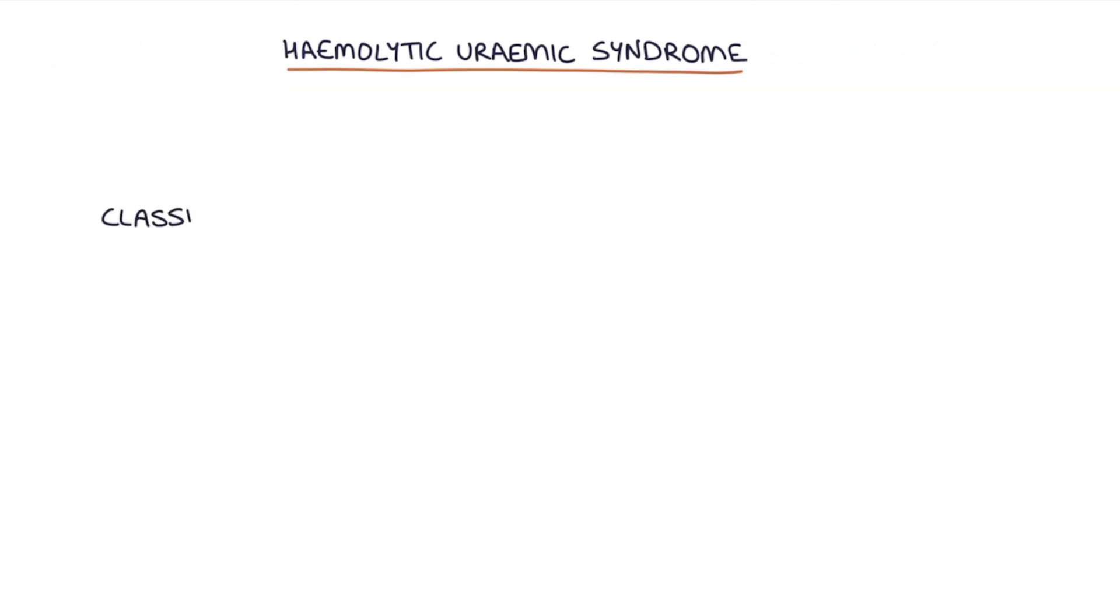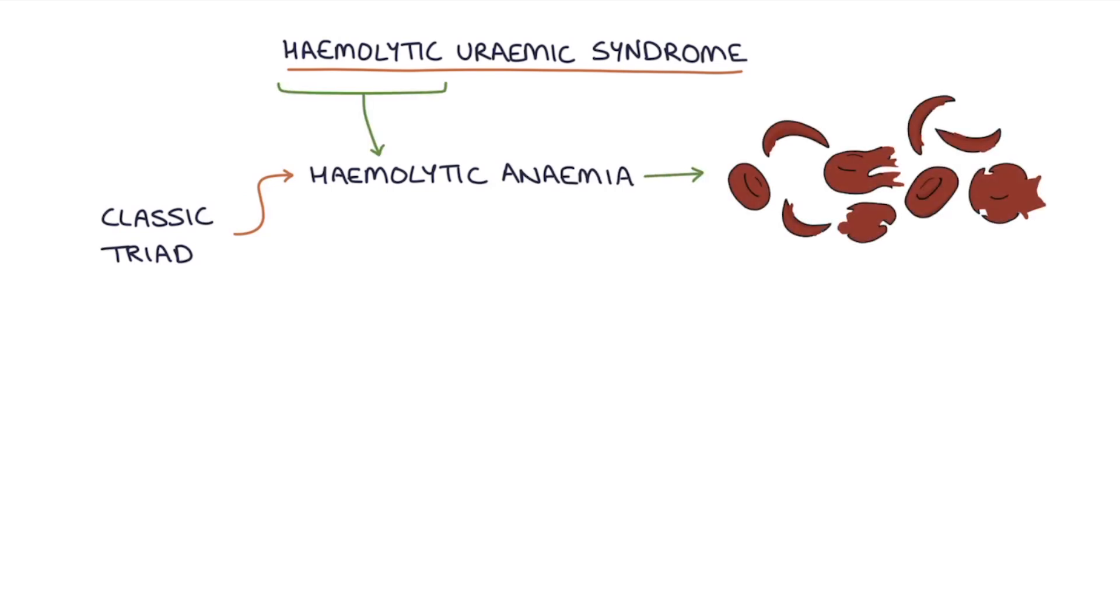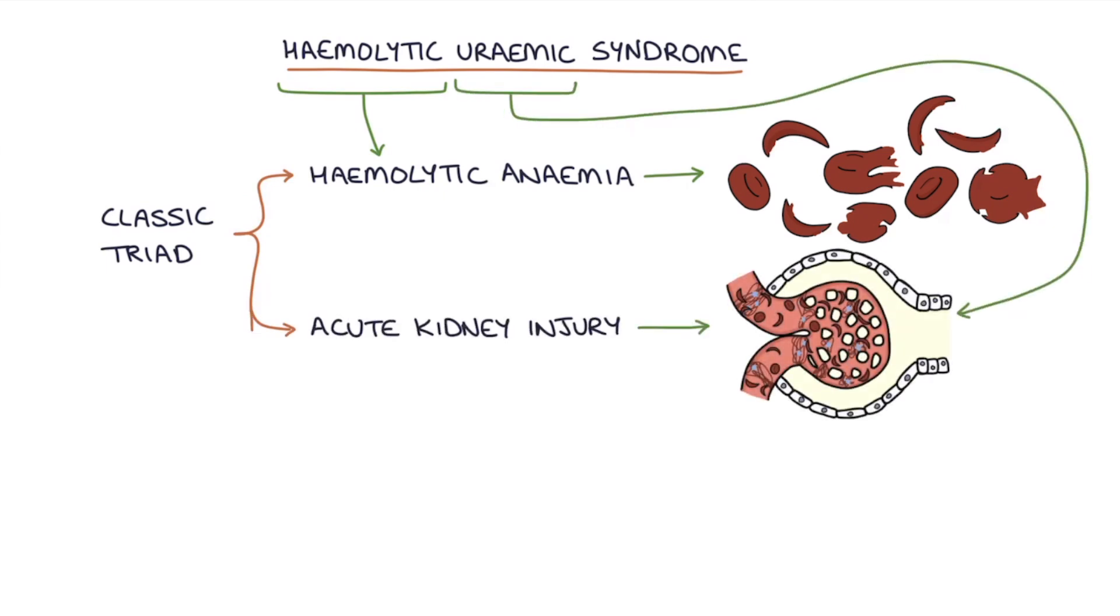And it leads to a classic triad of hemolytic anemia—so this is anemia caused by the breakdown of red blood cells—acute kidney injury, and a low platelet count, which is described as thrombocytopenia.